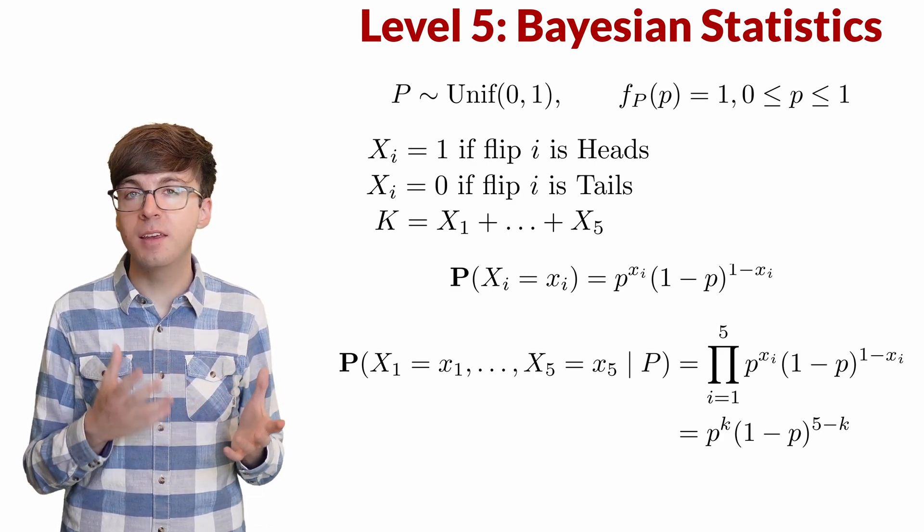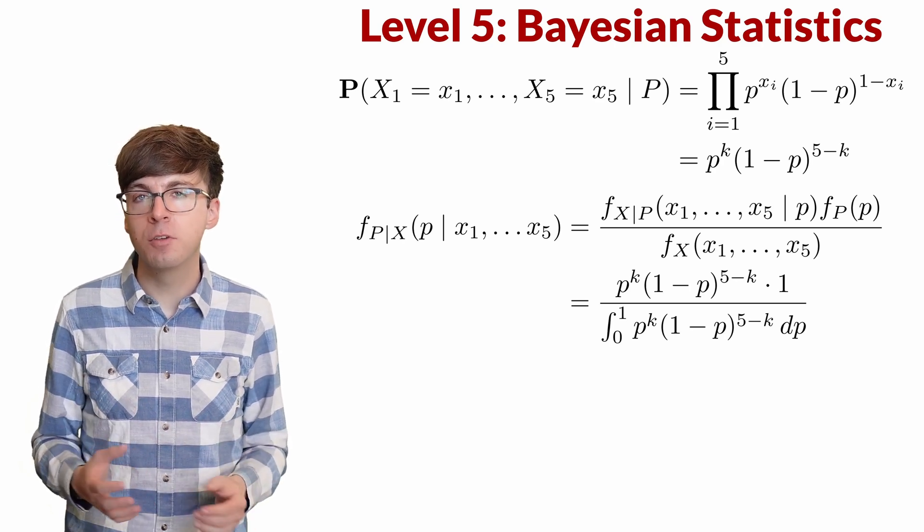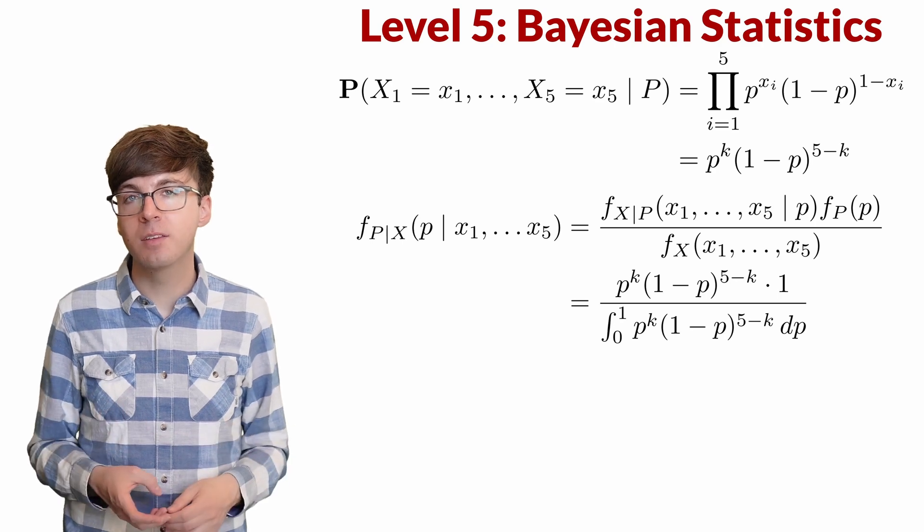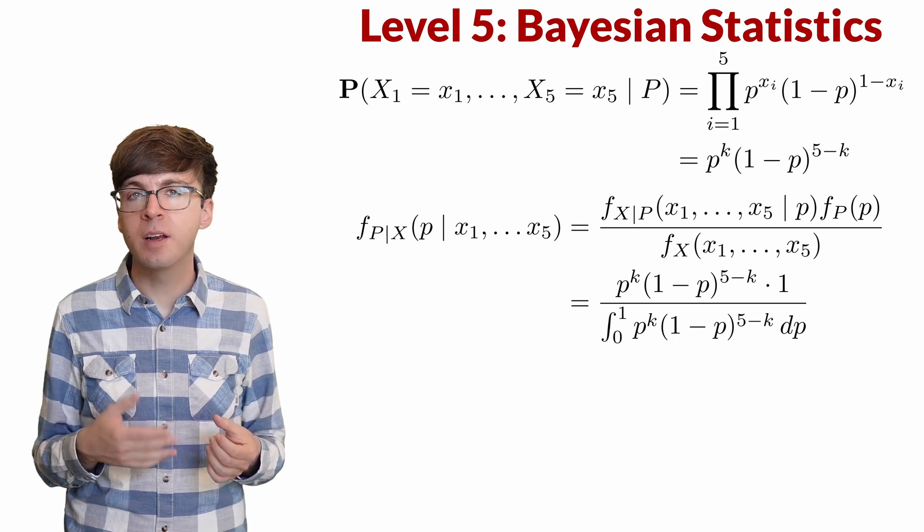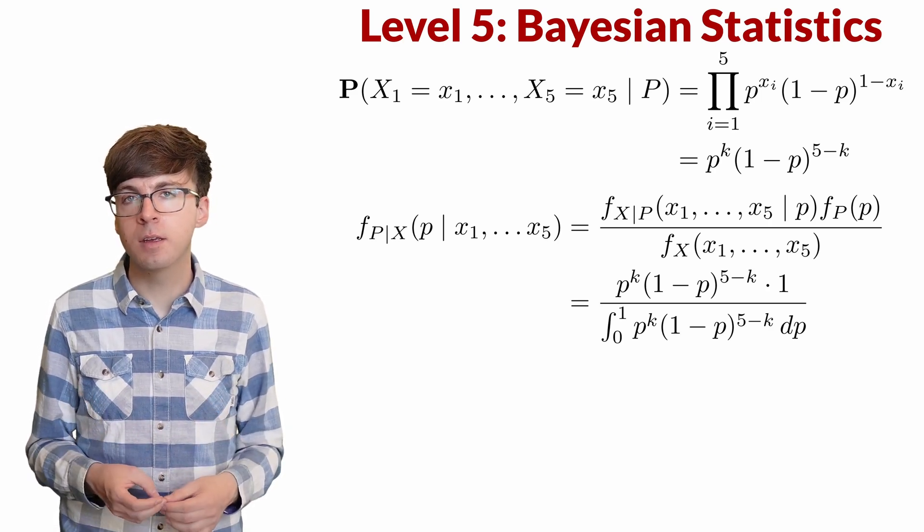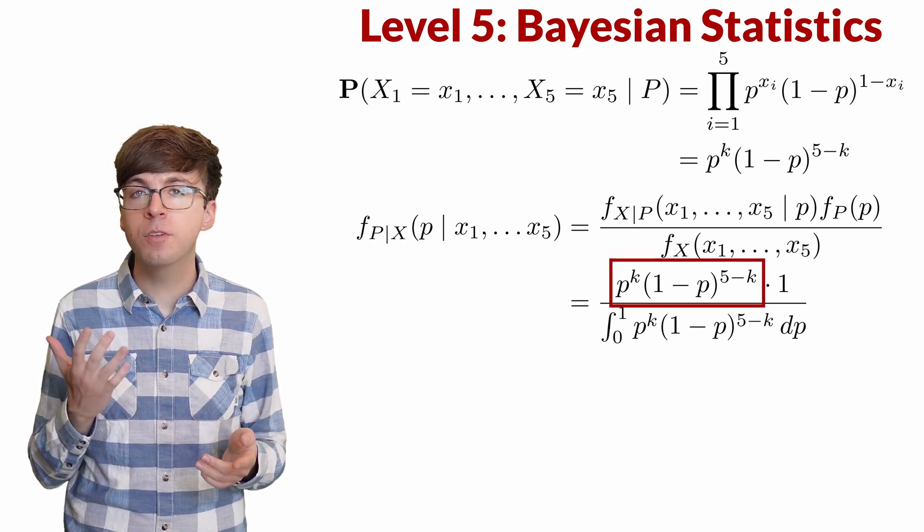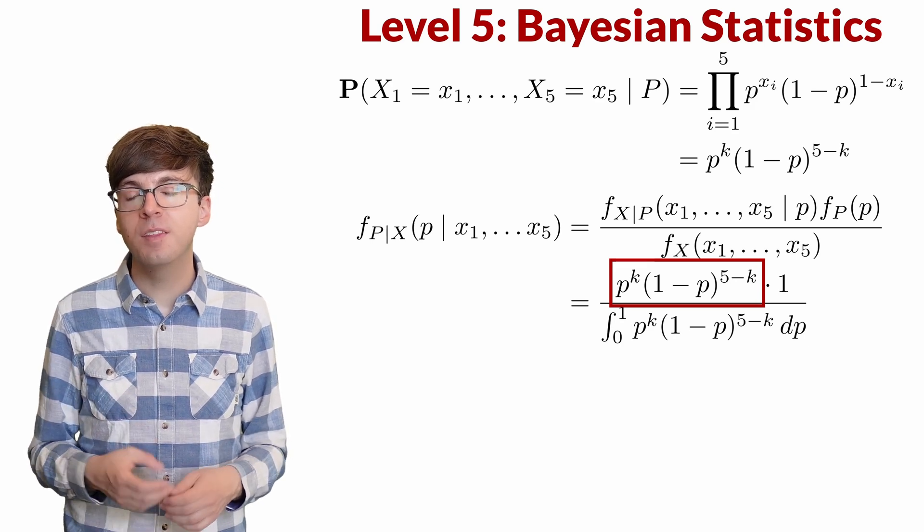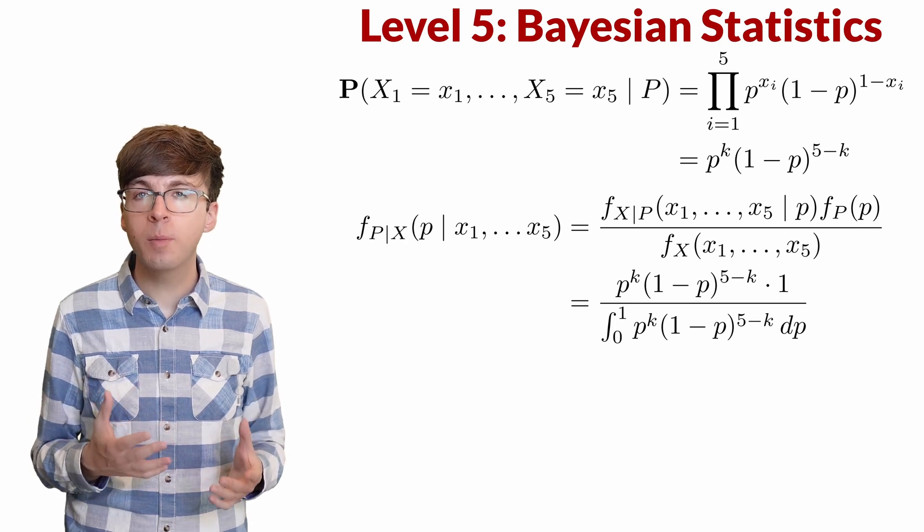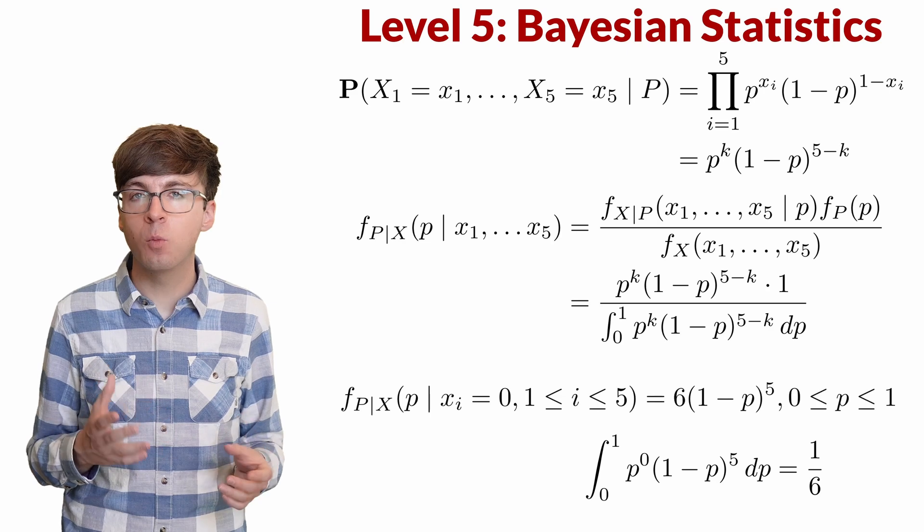Our goal is to find the distribution of p given x. So we use Bayes' theorem. We take the density of p, multiply by f of x given p, and then we need to divide by the marginal distribution of x. To find this, we integrate the variable p out of the joint distribution so that only x remains. That's the integral from zero to one of p to the k times 1 minus p to the 5 minus k dp. This is just a normalizing constant, so it's not too important what that constant is. It just makes sure our density function integrates to one. So we see the updated density for p, the posterior distribution, is proportional to p to the k times 1 minus p to the 5 minus k. This is a type of beta distribution. In our case, k equals zero since we got five tails in a row. The density will be proportional to 1 minus p to the fifth. In this particular case, the normalizing constant is quite nice. It's just one-sixth. So our density function is 6 times 1 minus p to the fifth.